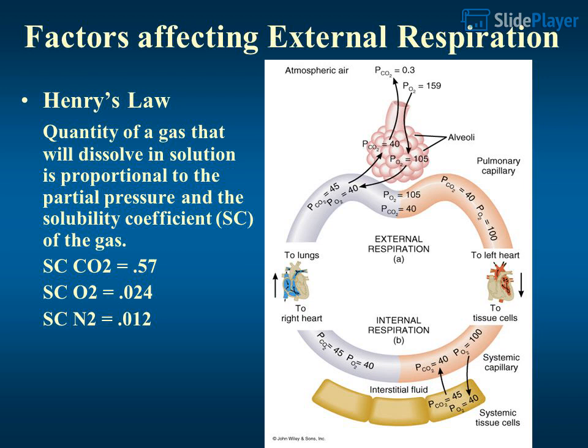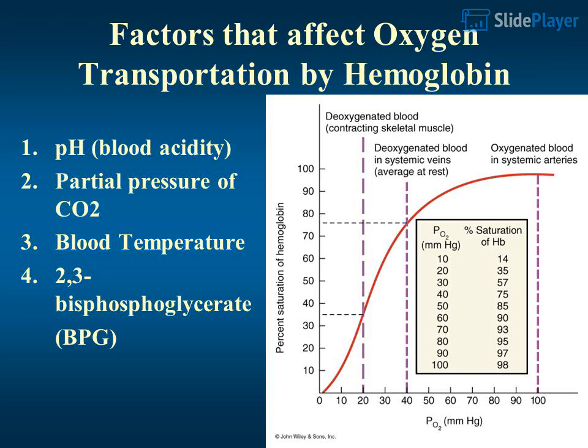Henry's law: the quantity of a gas that will dissolve in solution is proportional to the partial pressure and the solubility coefficient (SC) of the gas. The SC for CO2 is 0.57, for O2 is 0.024, and for N2 is 0.012. Factors that affect oxygen transportation by hemoglobin include pH, blood acidity, partial pressure of CO2, blood temperature, and 2,3-bisphosphoglycerate (BPG).